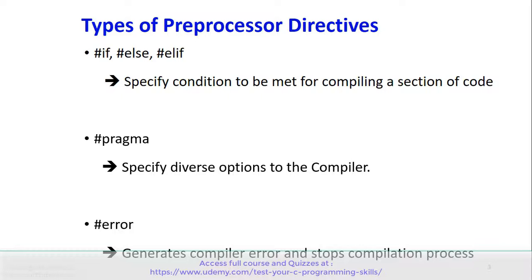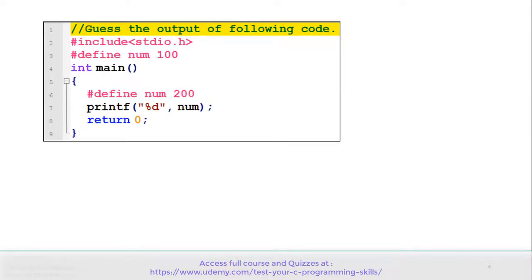Let's move to the first example of this session. See the code carefully and guess the output. In the code, there is a macro definition on line number 3. In the main function, that macro is again redefined on line number 6. There is a printf on line number 7 which displays the value of num. The correct answer is: this program gives 200 as output.